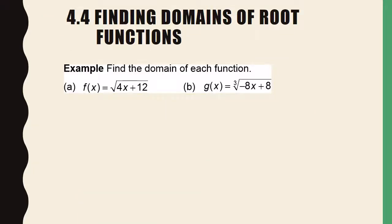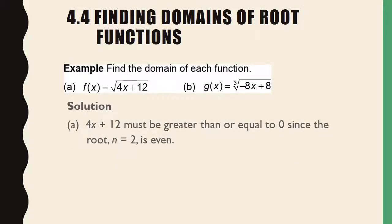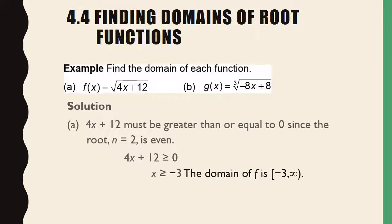Find the domain of each function. For part A, we have an even root, so we need 4x plus 12 to be greater than or equal to 0. Set 4x plus 12 greater than or equal to 0 and solve for x — we get x must be greater than or equal to negative 3. In interval notation: bracket negative 3, comma, infinity, close parenthesis. Part B is very simple: you have an odd root, so the domain is all real numbers.